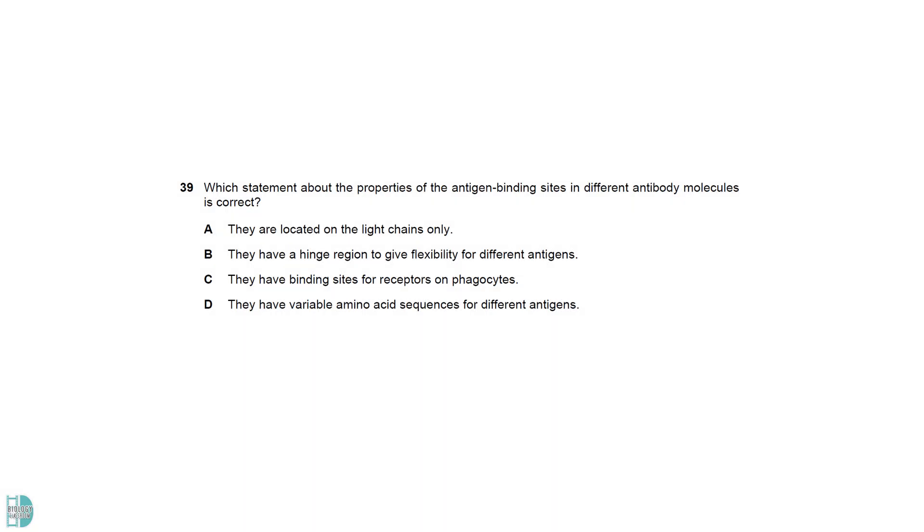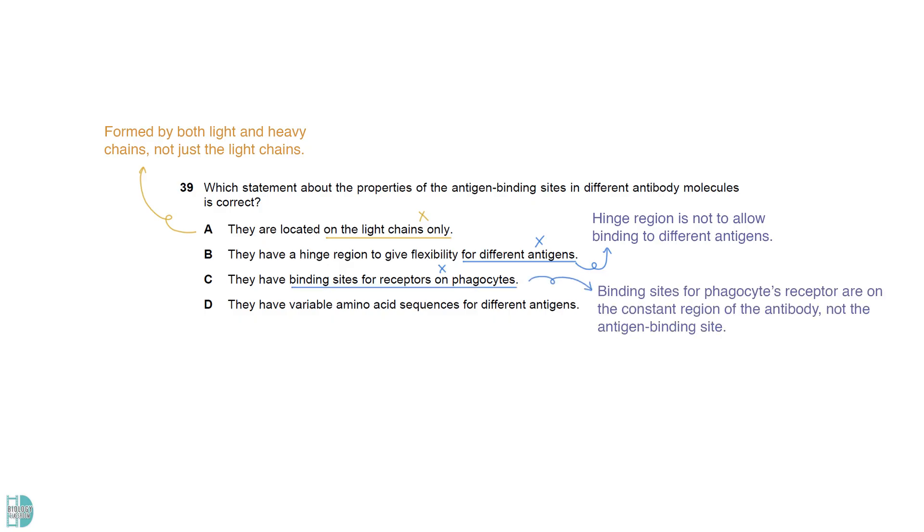A is incorrect. The antigen binding site is formed by both light and heavy chains, not just the light chains. B is also incorrect. The hinge region in an antibody does provide flexibility, but its function is not to allow binding to different antigens. C is wrong. Those binding sites are on the constant region of the antibody, not the antigen binding site. D is correct. The variable amino acid sequences lead to a unique 3D shape, providing it with the specificity.